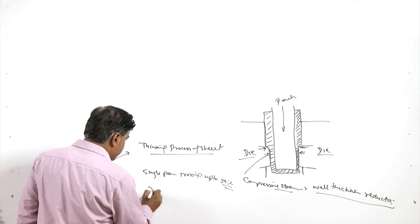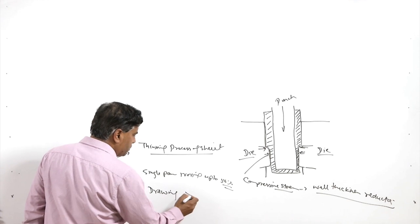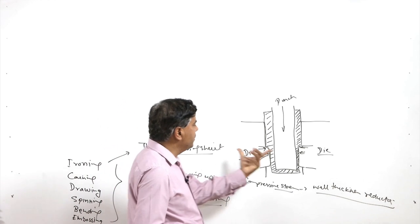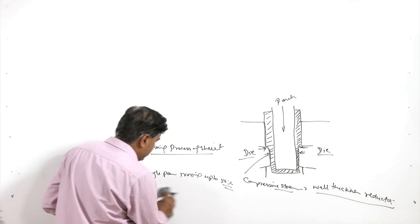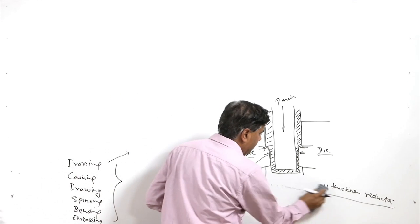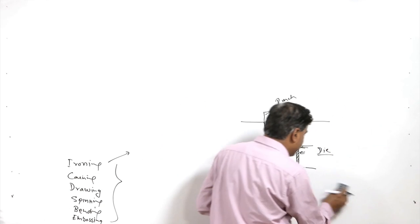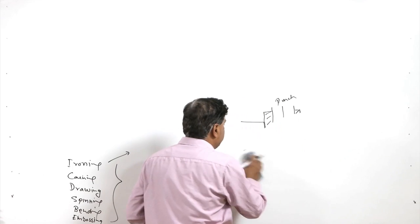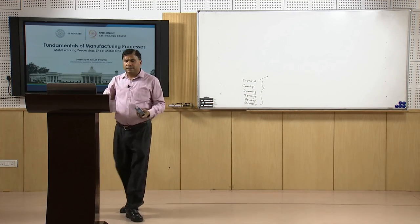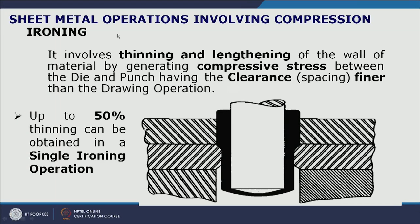Comparing with the drawing process: the clearance for drawing is more than that used for ironing. Ironing basically helps to reduce the wall thickness of the sheet metal with the help of compressive stresses generated when metal is forced to pass through the gap between the die and punch. Ironing involves thinning and lengthening of the wall of the material by generating compressive stresses between the die and punch.